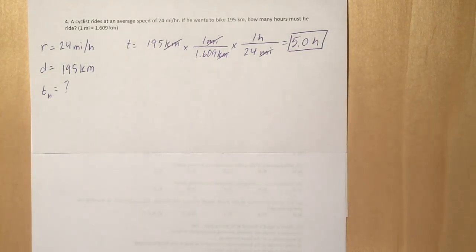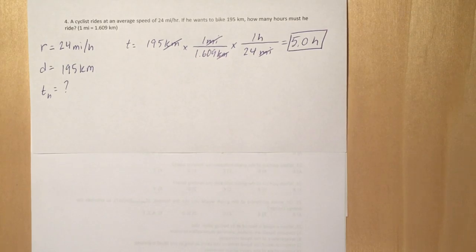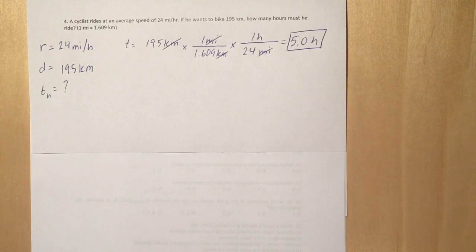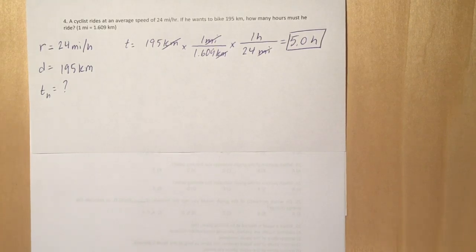Okay, so let's try this one. A cyclist rides at an average speed of 24 miles per hour. If he wants to ride 195 kilometers, how many hours must he ride?